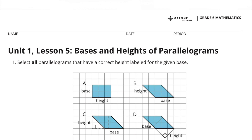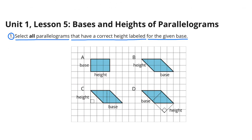Unit 1 Lesson 5: Bases and Heights of Parallelograms. Number 1: Select all parallelograms that have a correct height labeled for the given base. In relation to the base, the height is going to be at a 90 degree angle.